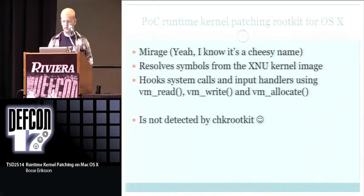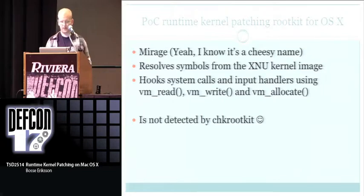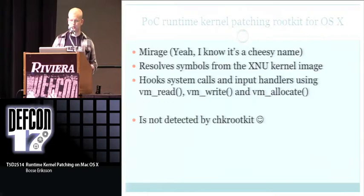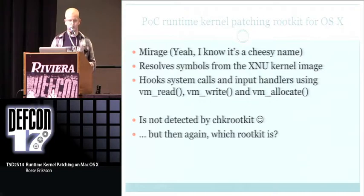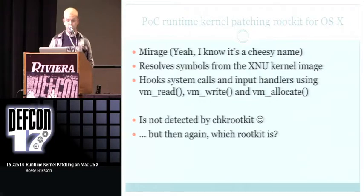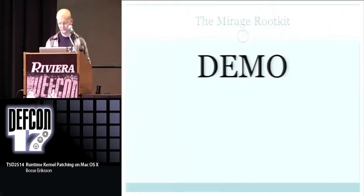I'm going to show you a proof of concept rootkit I put together for this. It's called Mirage. It resolves symbols from the XNU kernel and hooks system calls using the Mach functions. It's not detected by chkrootkit, but I don't know any serious rootkit that is detected by chkrootkit.